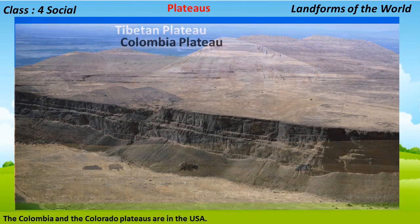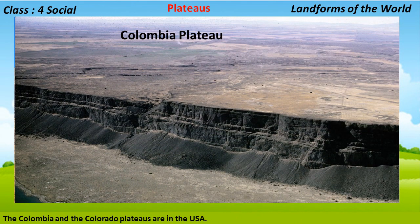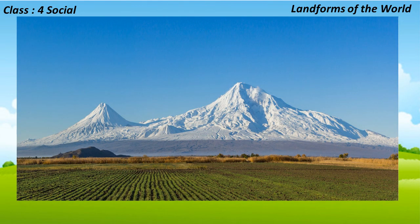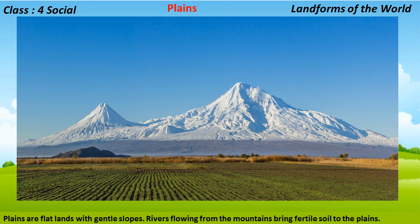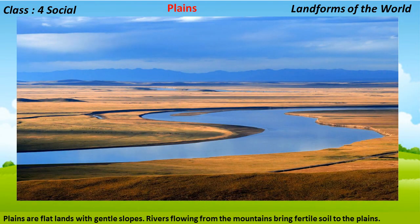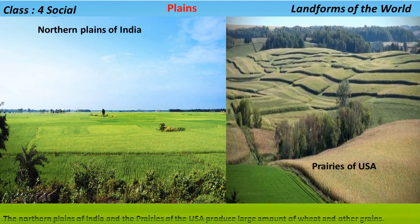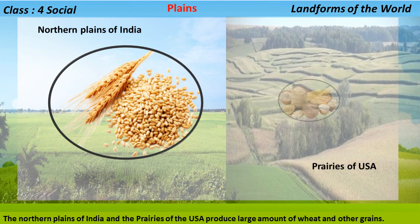The Columbia and Colorado plateaus are in the USA. Plains are flat lands with gentle slopes. Rivers flowing from the mountains bring fertile soil to the plains. Plains are therefore the most thickly populated areas in the world. The northern plains of India and the prairies of the USA produce large amounts of wheat and other grains.